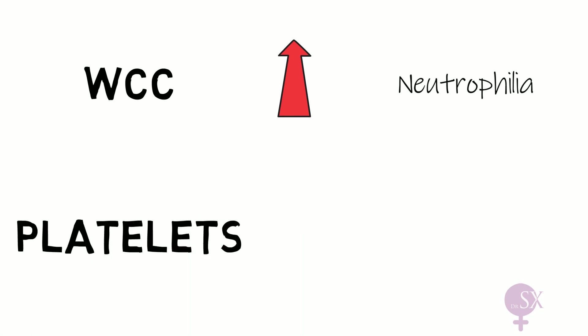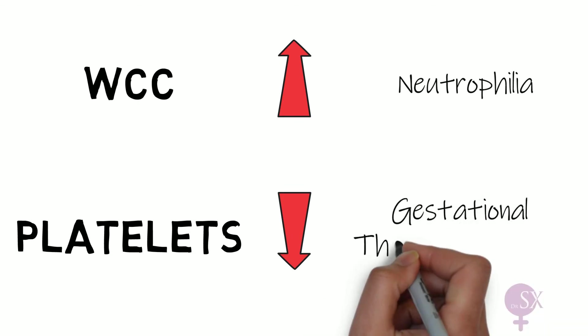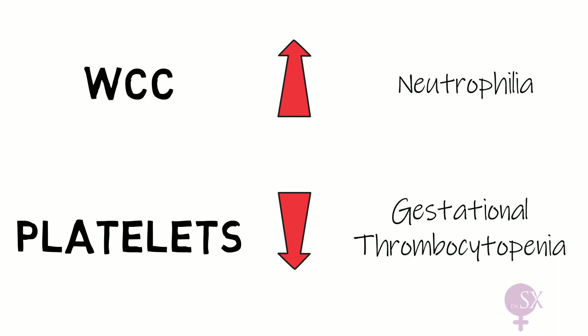In pregnancy there is also a rise in the white cell count and this is mainly due to a neutrophilia. The platelet count in pregnancy decreases and this is due to increased destruction of platelets by immune factors and this is referred to as gestational thrombocytopenia.